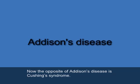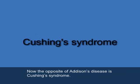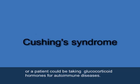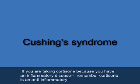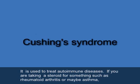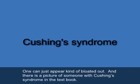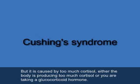The opposite of Addison's disease is Cushing's syndrome (C-U-S-H-I-N-G'S syndrome). Cushing's syndrome occurs when the adrenals produce too much cortisol, or when a patient is taking glucocorticoid hormones for autoimmune diseases — such as rheumatoid arthritis or asthma. It is marked by a moon-faced, bloated appearance. There is a picture of someone with Cushing's syndrome in the textbook.